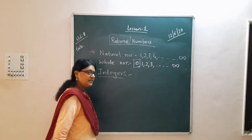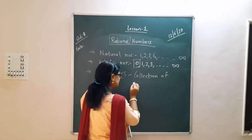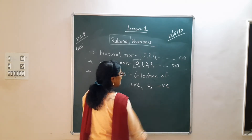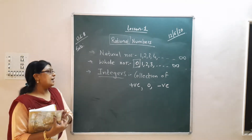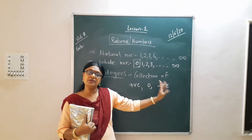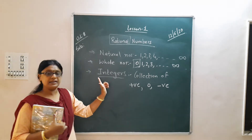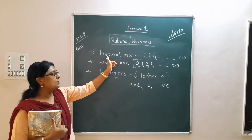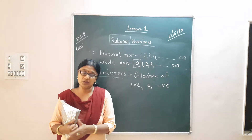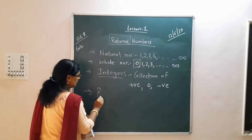Then comes integers. Integers means the collection of positive numbers, 0, and negative numbers. So together, this whole group — positive numbers, negative numbers, and 0 — makes integers. So natural numbers, whole numbers, and integers. We also have real numbers and all that, but from this the main thing is rational numbers.